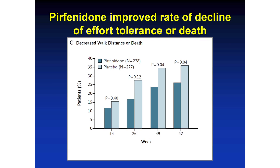They also looked at how much patients were able to walk. Time is on the x-axis and proportion of patients on the y-axis. Lighter bars represent patients who got placebo and darker bars represent patients who got pirfenidone. Taller bars are worse and shorter bars are better, because that means a smaller proportion of patients worsened. They found that patients who got pirfenidone had less worsening of their walk distance.